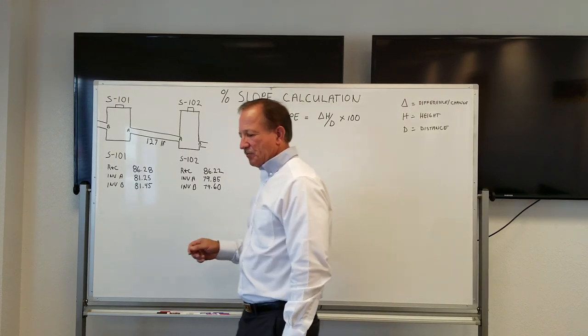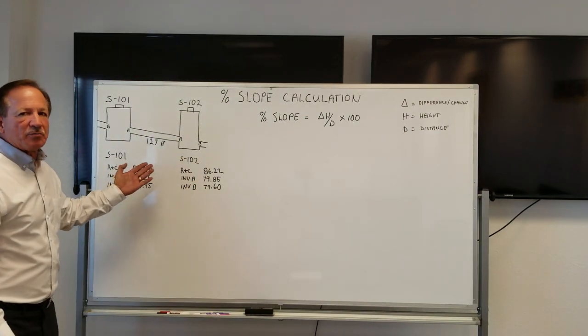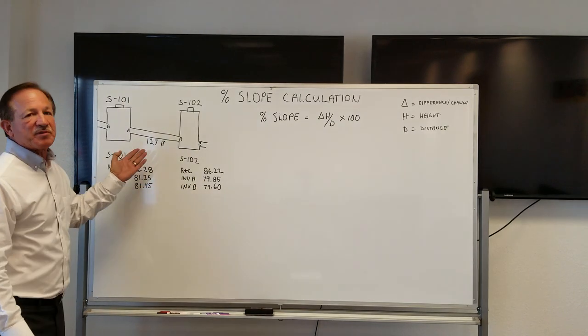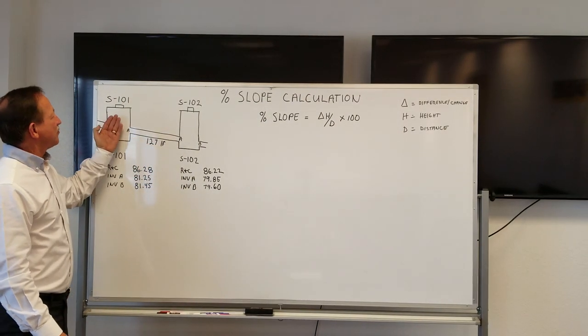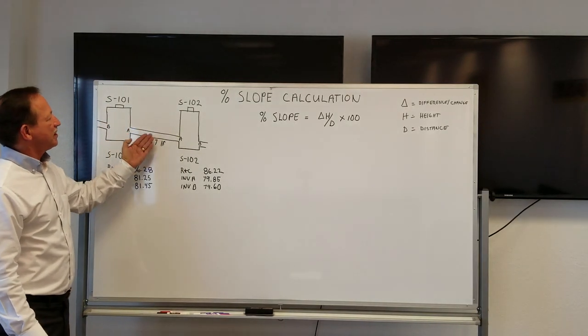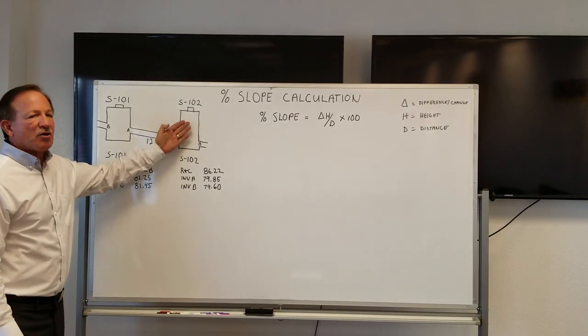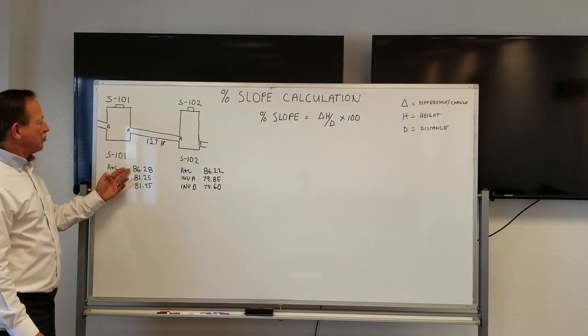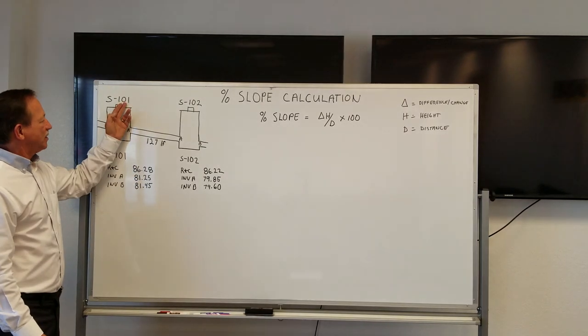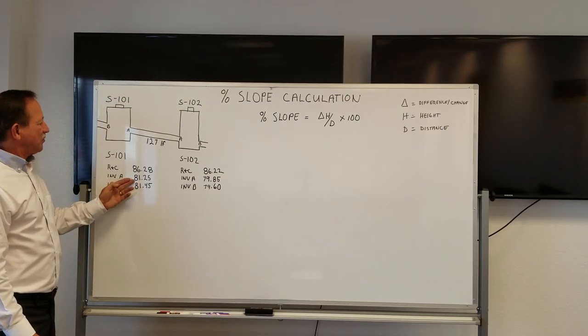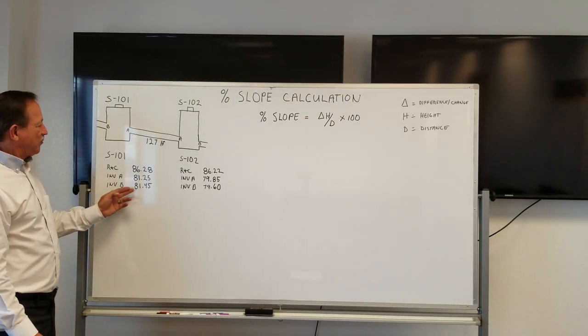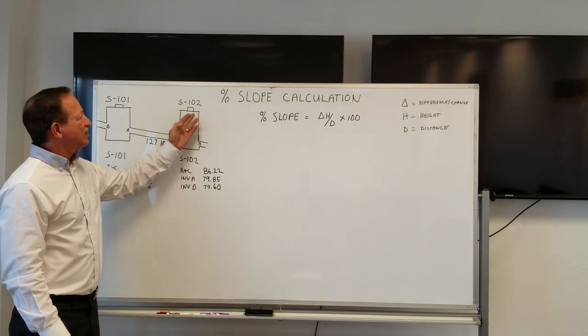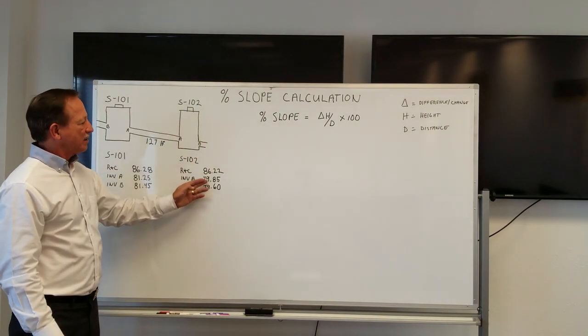So when we talk about change in height and distance, what are we talking about? Let's go over here and look. This is a simple drawing you might find on pretty much any plans and prints for a set of utility drawings. This one I drew up is a little storm drain system. We have structure number 101, where the pipe is leading over to structure 102. Here we have structure S-101, and we see that the ring and cover has an elevation reading of 86.28. We have an invert A which is 81.25, we have an invert B which is 81.45. On structure S-102, we have the same information: a ring and cover at 86.22, an invert A of 79.85, and an invert B of 79.60.